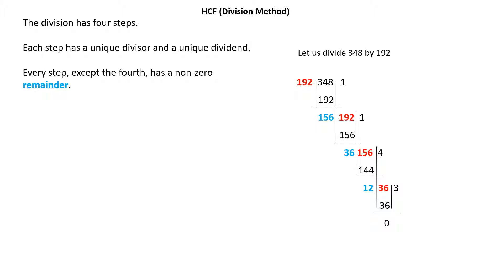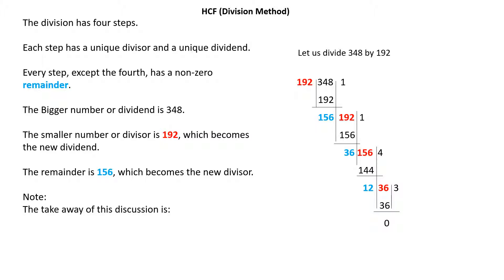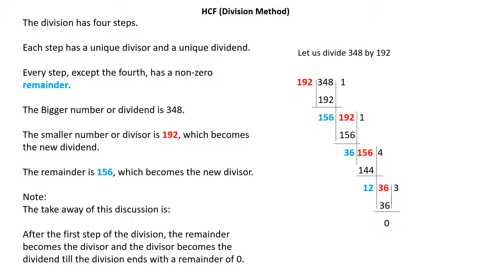The division has four steps, each with a unique divisor and dividend. Every step except the last has a non-zero remainder. The key takeaway is: after the first step, the remainder becomes the divisor and the divisor becomes the dividend, and we continue until the remainder is 0. The last divisor is the HCF.